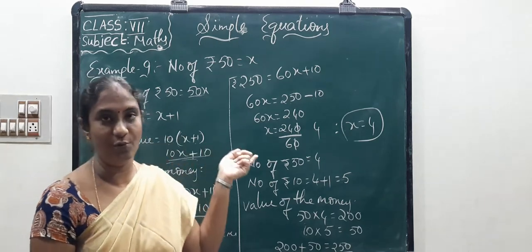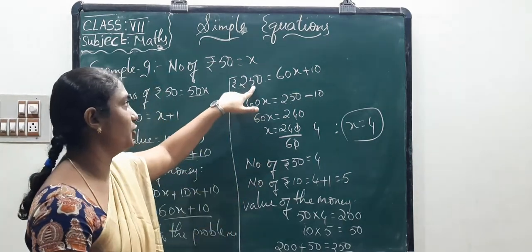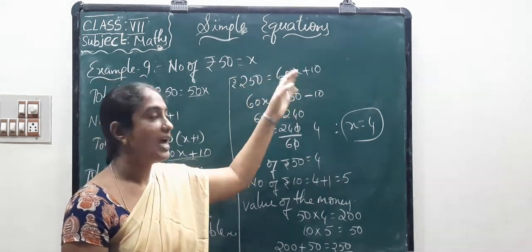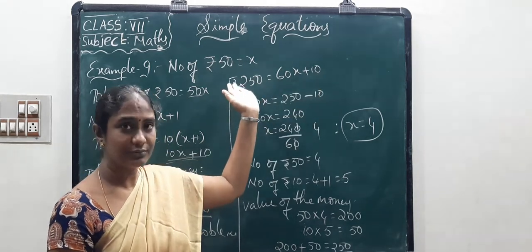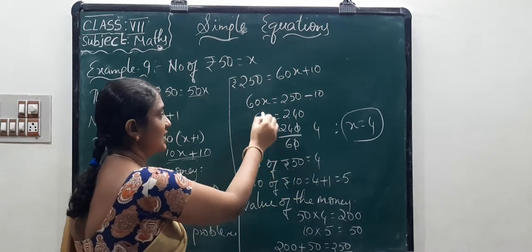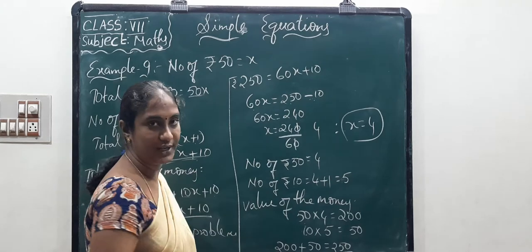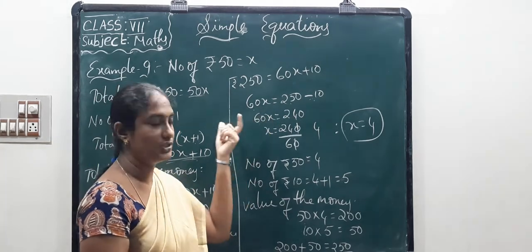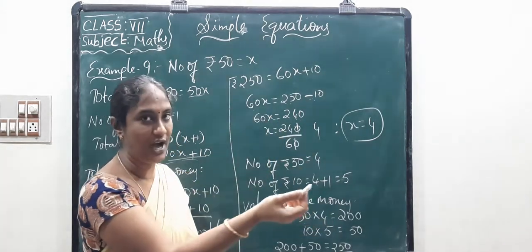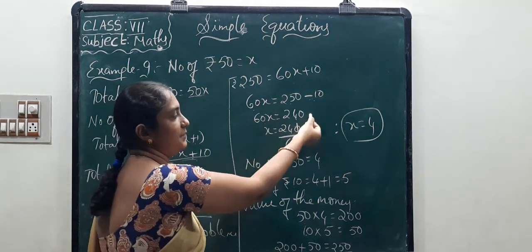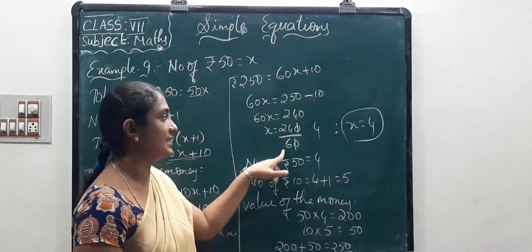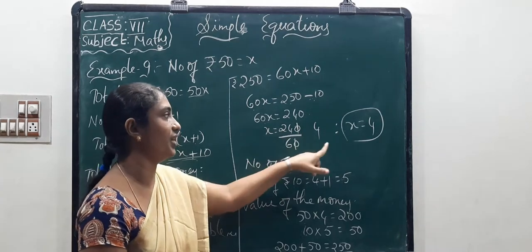According to the problem, total money is 250 rupees. So 250 equals 60X plus 10. Transposing plus 10 to RHS: 60X equals 250 minus 10 equals 240. Since 60X means 60 into X, transposing multiplication to RHS gives division: X equals 240 by 60. Cancelling zeros: X equals 4.